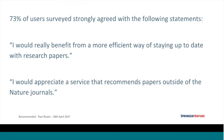We ran a follow-up survey more recently, around September-October of 2016, really just sanity-checking this user need. As you can see on the slide, 73% of our users who responded strongly agreed that they would really benefit from a more efficient way of staying up-to-date with research papers. They would also appreciate a service that recommends papers outside just Nature. Although we want to promote Springer Nature journals, we recognize that to be a useful service, it would be much more useful if we could recommend from across the corpus.